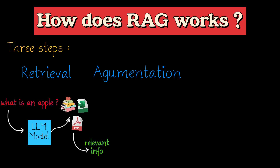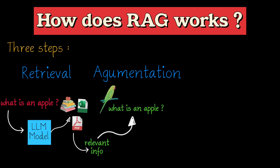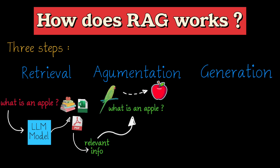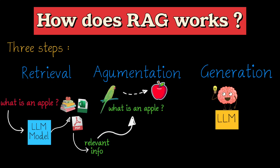Second, augmentation: the retrieved information is then presented alongside the original prompt — think of it like showing your parrot a picture of an apple. Third, generation: the LLM uses its knowledge and understanding of language, along with the additional context from the retrieved information, to generate a response.